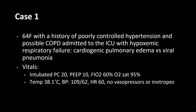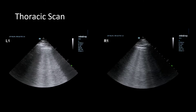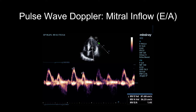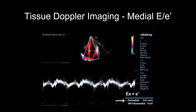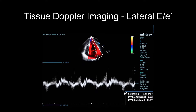Let's go back to our cases. Case 1 was a 64-year-old woman with poorly controlled hypertension and possible COPD admitted with hypoxic respiratory failure — cardiogenic pulmonary edema or viral pneumonia? Her thoracic scan showed anterior B lines. Pulse-wave Doppler of mitral valve inflow shows an E of 81 cm/s. Tissue Doppler imaging on the medial side shows an E-prime of 5.81 cm/s; the lateral E-prime was 5.81 cm/s as well, giving an E over E-prime of 14 — elevated left atrial pressure. This patient was diagnosed with cardiogenic pulmonary edema and was diuresed.